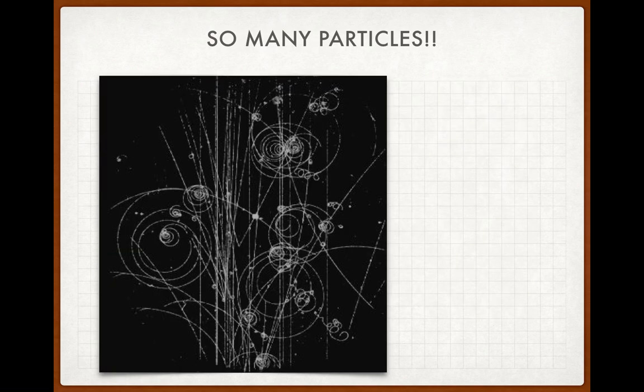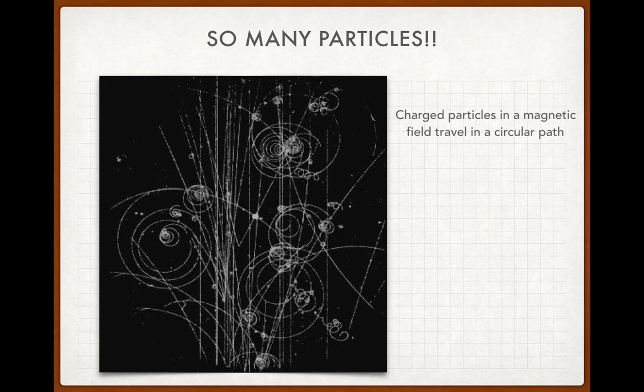Another viewpoint shows particles that travel in a straight line and particles that travel in a spiral fashion. Based on these tracks, a computer can assess what type of particles they are. Depending on the thickness of the line, you can determine the mass. Depending on the radius of the circular path, you can determine the speed and mass. The reason for these circular paths is that charged particles in magnetic fields travel in a circle, so the straight lines likely represent non-charged particles and the spirals represent charged particles.